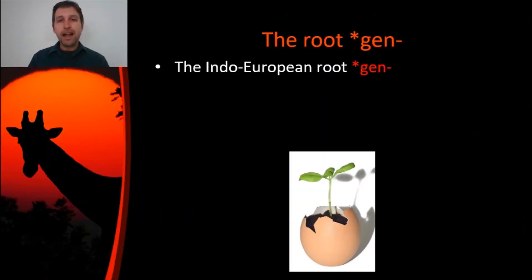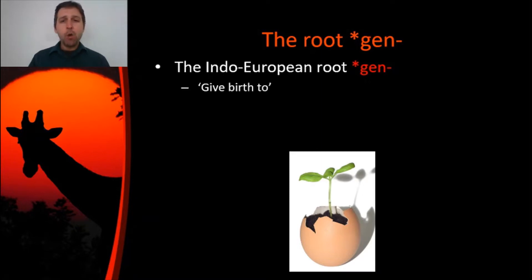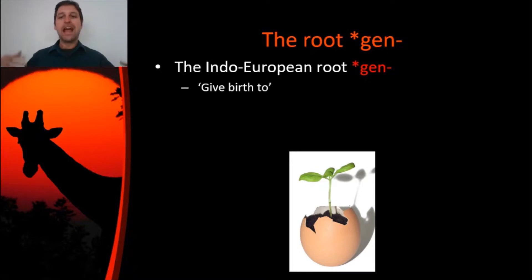We're going to be looking at the Indo-European root Gen. This root is all over the place in the English language from a number of different sources — from Greek, from Latin, and from our native Germanic inheritance in English. What does this root mean, or what did it originally mean? It had something to do with creating something, giving birth to something.